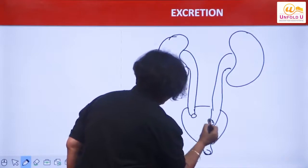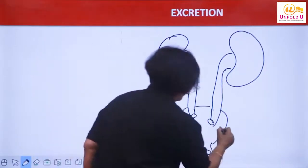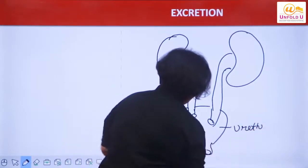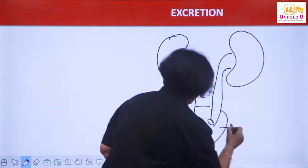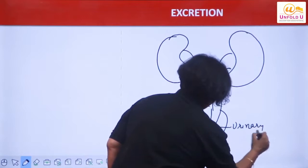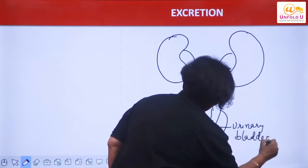Ureters are further opening into a pear-shaped sack. This structure is called urinary bladder.